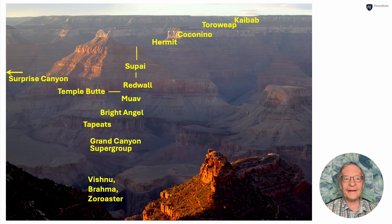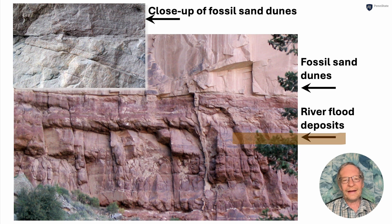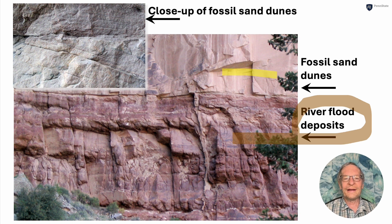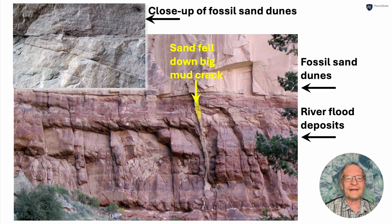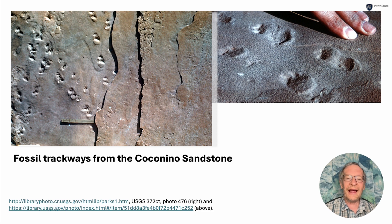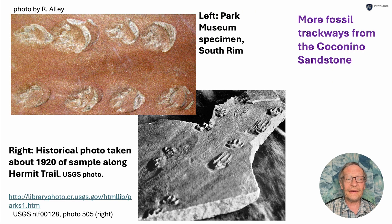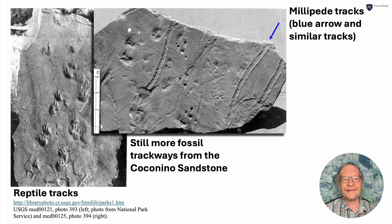Then we go above the Hermit and look at the Coconino, where it lies on the Hermit — you can see this along the trail. Down below are the river flood deposits, and above are the fossil sand dunes of the Coconino. Right there is where sand fell down a big mud crack — think of the Nile River depositing muds and then dunes of the Sahara blowing in and dropping down into this huge mud crack. Up in the fossil sand dunes of the Coconino you can find lots of different layers with little tracks of various creatures. The blue there shows millipede tracks, and there had to be time for the millipedes to walk along there.